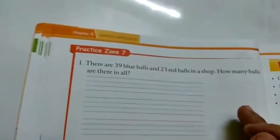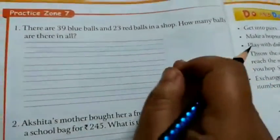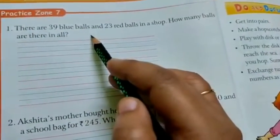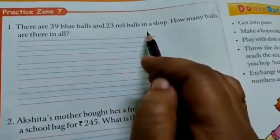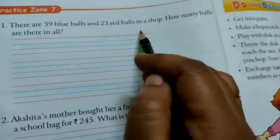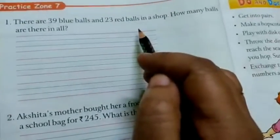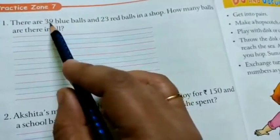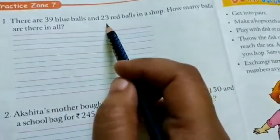So let's see on page number 82, Practice Zone 7. There are 39 blue balls and 23 red balls in a shop. How many balls are there in all? So in all means what? You have to add both.